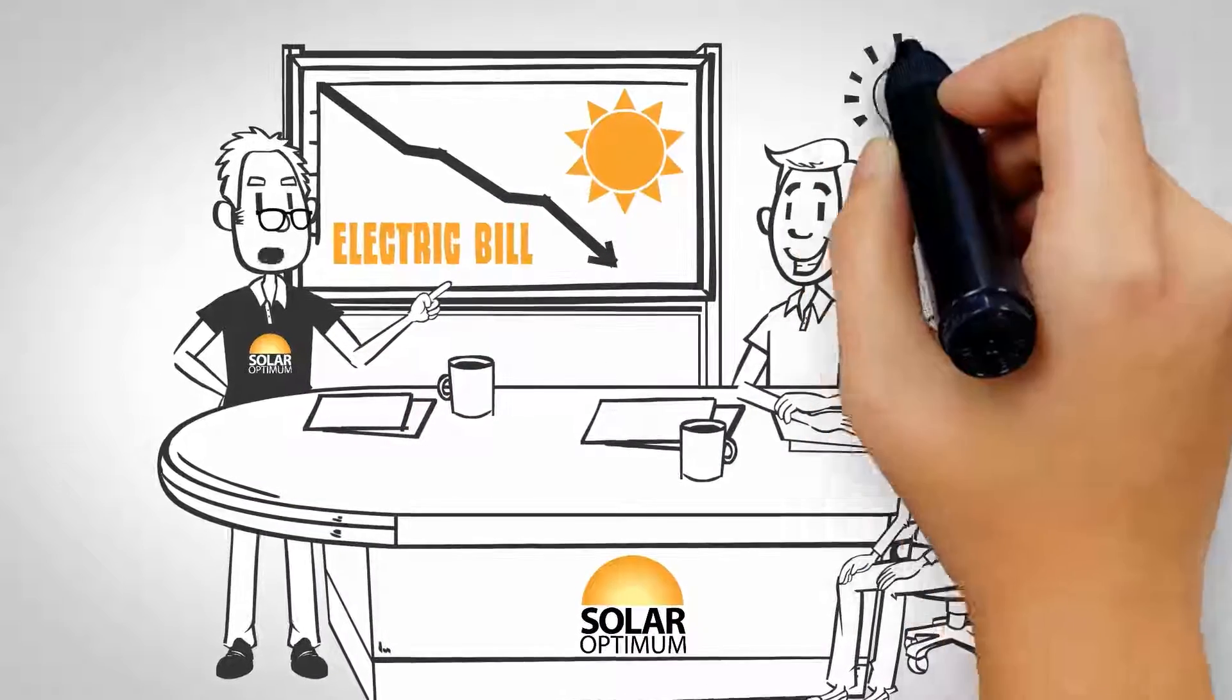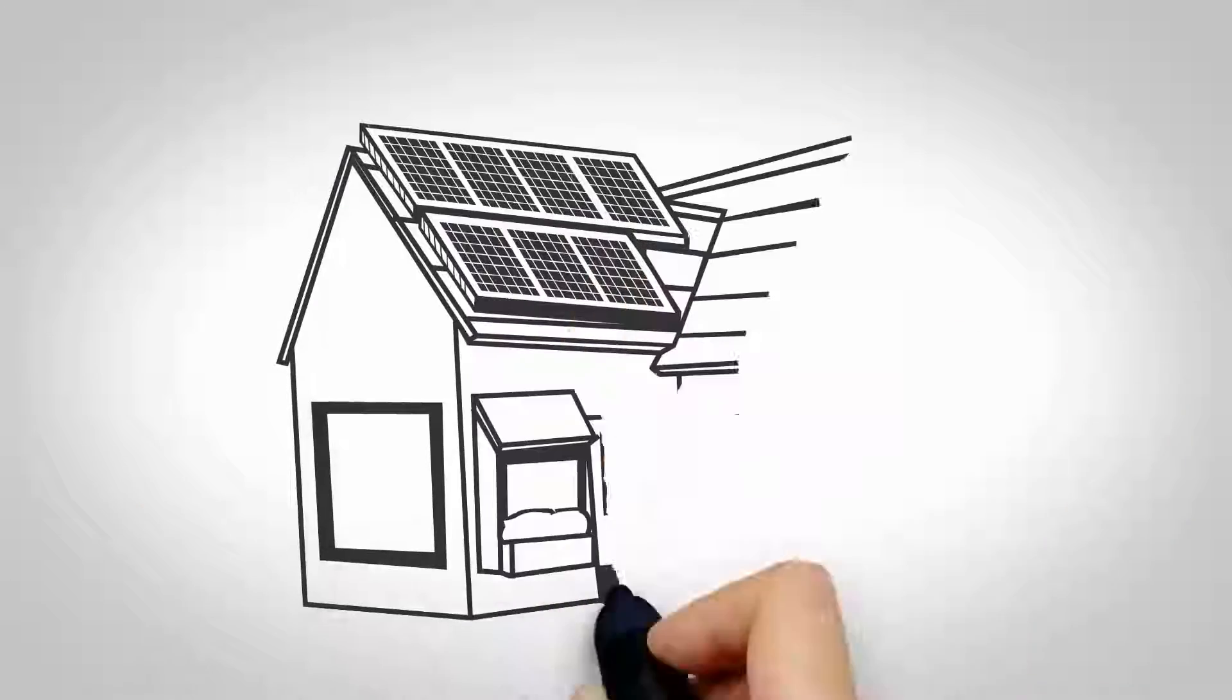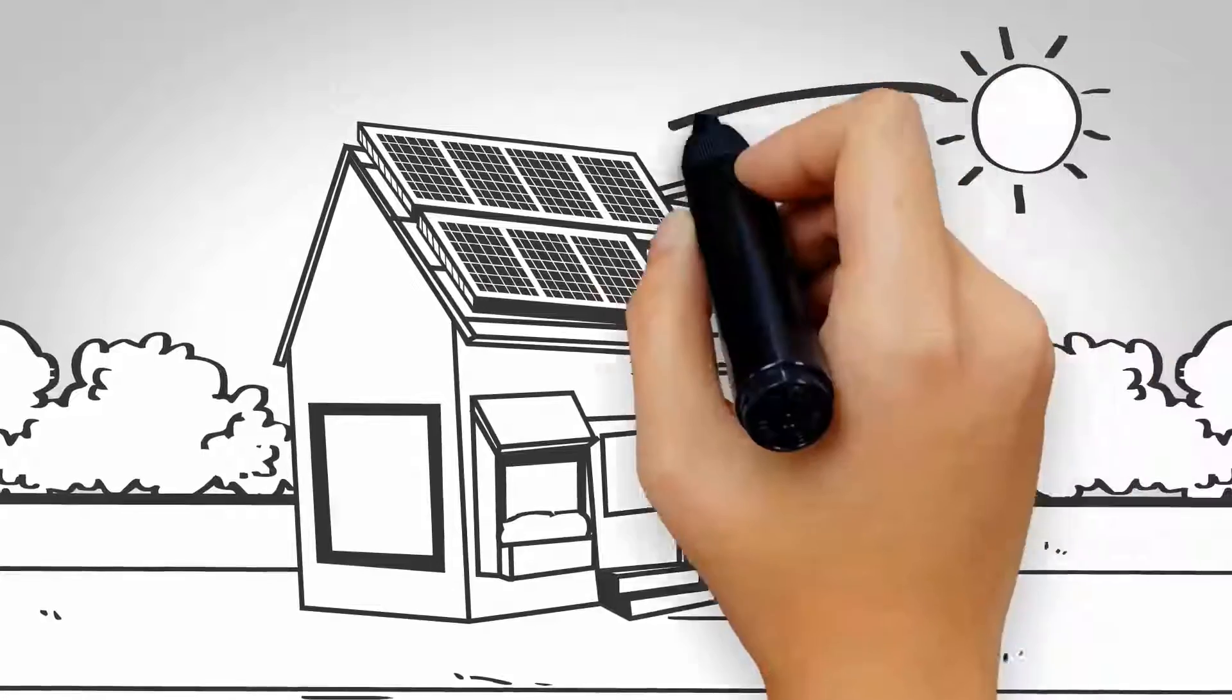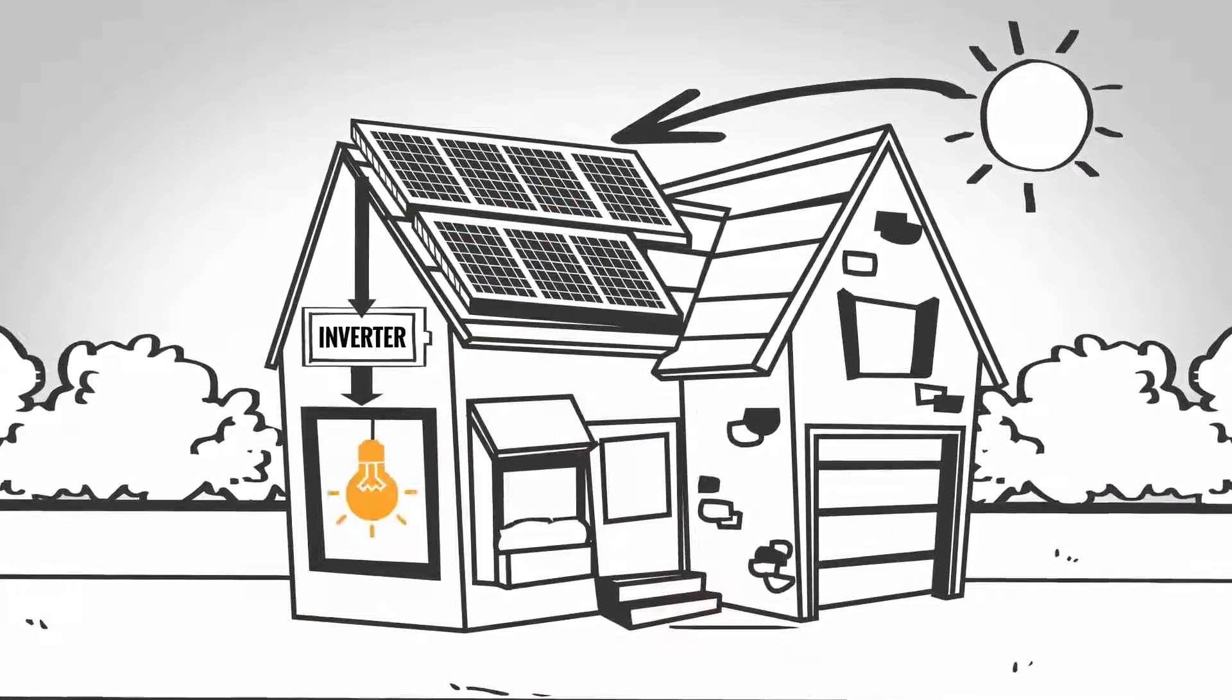What they learned about solar from the energy consultant made it all so simple. Solar panels collect power from the sun and is sent to a device called an inverter that's used to power, among other things, household appliances.